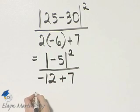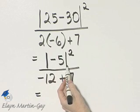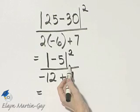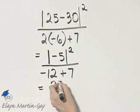Now let's continue to simplify. The absolute value of negative 5 is 5, and 5 squared is 25.